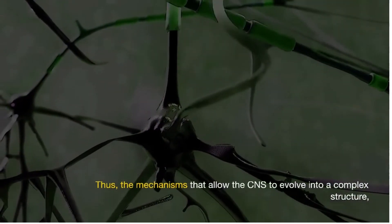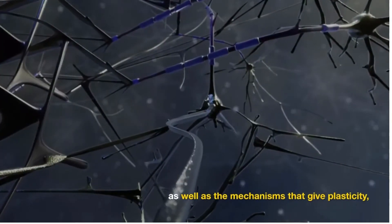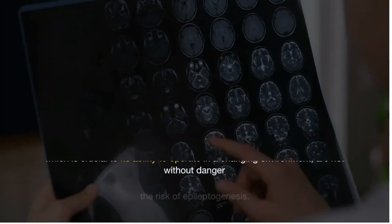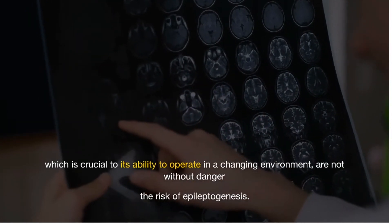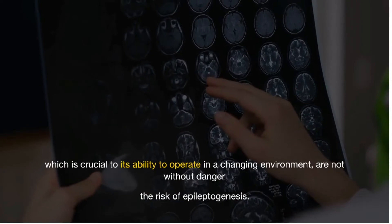Thus, the mechanisms that allow the CNS to evolve into a complex structure, as well as the mechanisms that give plasticity, which is crucial to its ability to operate in a changing environment, are not without danger, the risk of epileptogenesis.